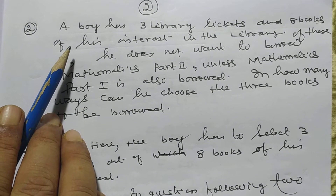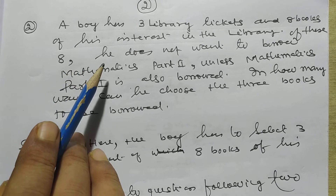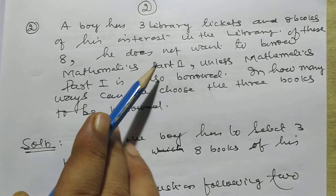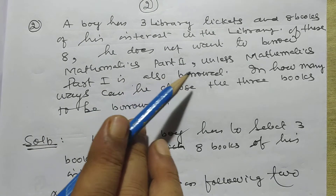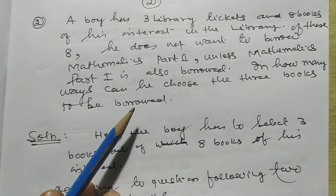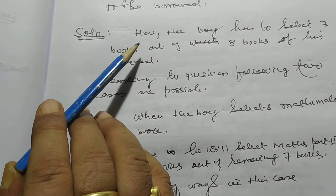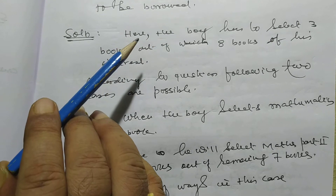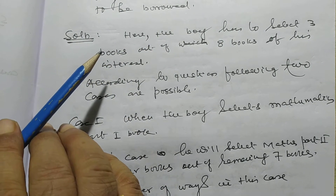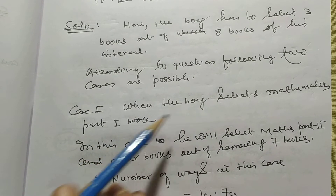Now I want to solve problem number 2. A boy has 3 library tickets and 8 books of his interest in the library. Of these 8, he does not want to borrow Mathematics Part 2 unless Mathematics Part 1 is also borrowed. In how many ways can he choose the 3 books? According to the question, two cases are possible.